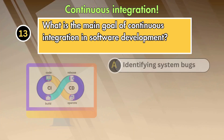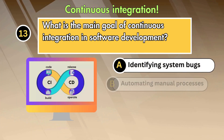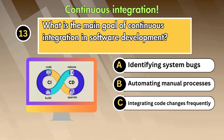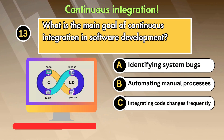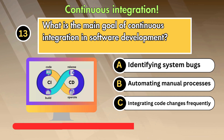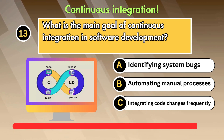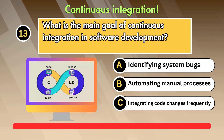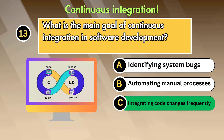Question 13: What is the main goal of continuous integration in software development? Option 1: Identifying system bugs. Option 2: Automating manual processes. Option 3: Integrating code changes frequently. Answer is: Integrating code changes frequently.